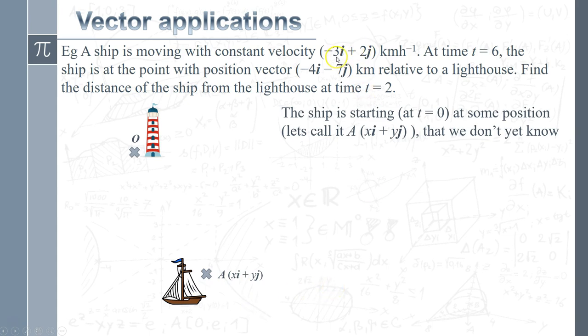And for each hour it moves, that's where we're going to be using the velocity. Because this is saying it's moving minus 3i plus 2j for each hour. So that's across 3 in this direction, up 2 each hour that it moves. So the ship's going to be doing something like that.